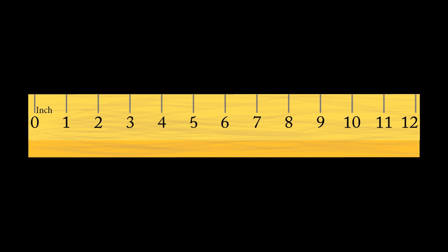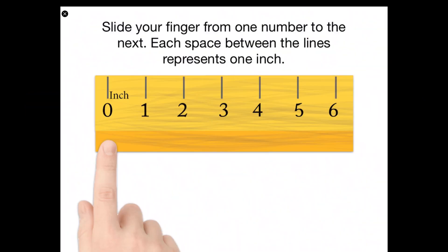Remember that measuring the length is the space between the tick marks or hash marks, not the tick marks themselves. Let me show you what that means. With your ruler, slide your finger from one number to the next. Each space between the lines represents one inch.